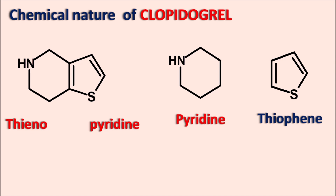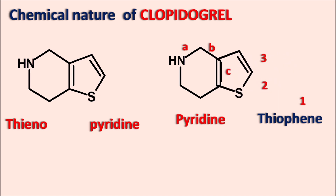To indicate the points of fusion, we label and number each ring. Numbering thiophene gives positions 1, 2, 3, and the sides of pyridine are labeled A, B, and C. The second and third positions of thiophene are fused with the C side of pyridine, written as 3,2-C. So clopidogrel contains a thieno[3,2-C]pyridine ring system.